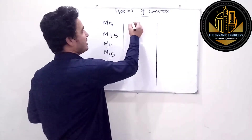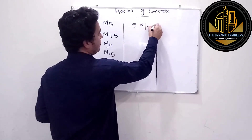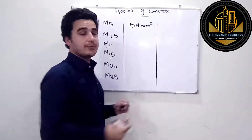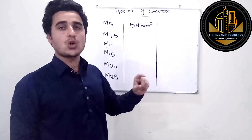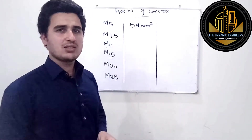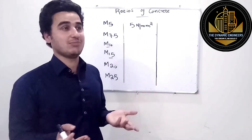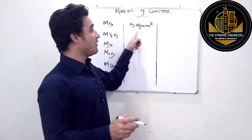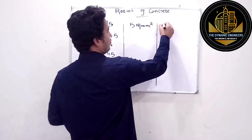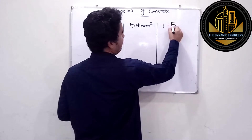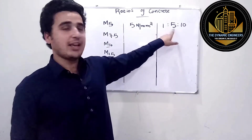Starting from M5 — M5 has a concrete strength of 5 Newton per millimeter square, or 5 megapascal. This is the very lowest possible concrete strength. 5 Newton per millimeter square is the minimum value of concrete that we can attain, and the ratio for this is 1:5:10 — that means 1 unit of cement, 5 units of sand, and 10 units of aggregate.